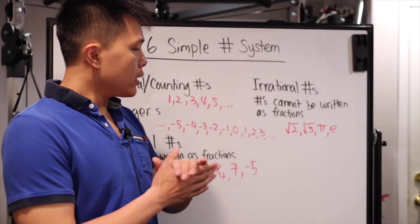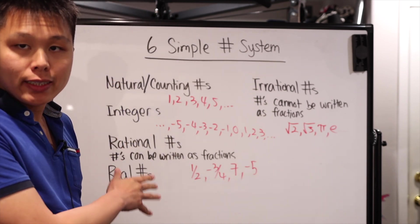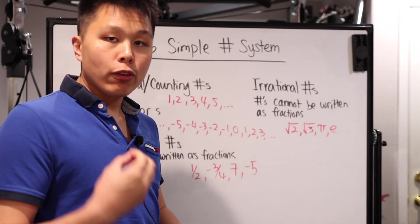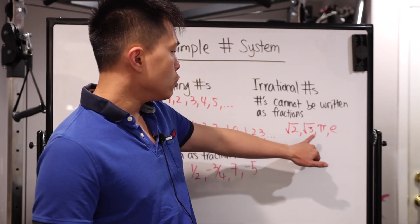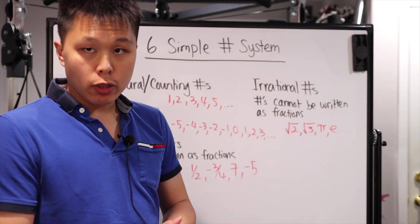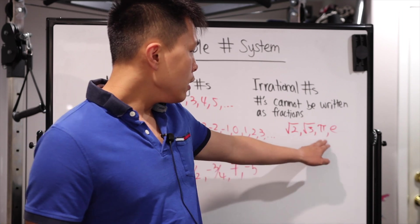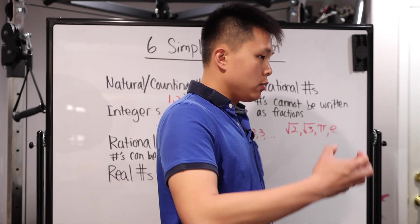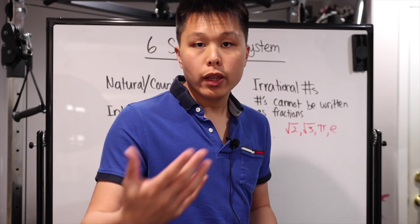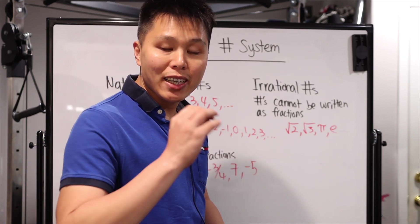So you can sort of guess the next one: irrational numbers. Basically it is the reverse of rational numbers. If rational numbers are numbers that can be written as a fraction, then irrational numbers are numbers that cannot be written as a fraction. The common ones are square root of two, square root of three. Don't get confused — not all square roots are irrational numbers; it just happens that square root two and square root three are irrational. You also have pi, which is commonly used to work with circles, and e, used to work with logarithms. These are all examples of irrational numbers.